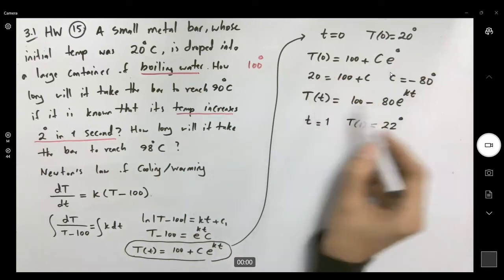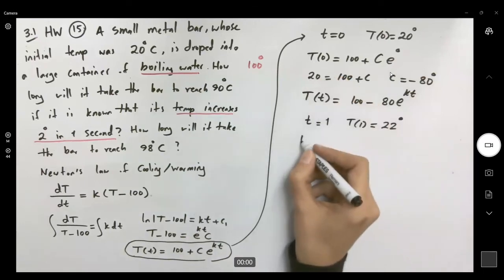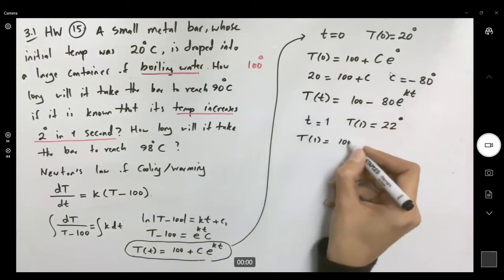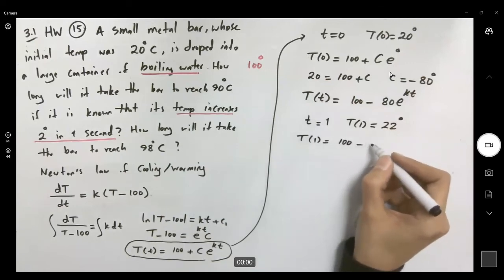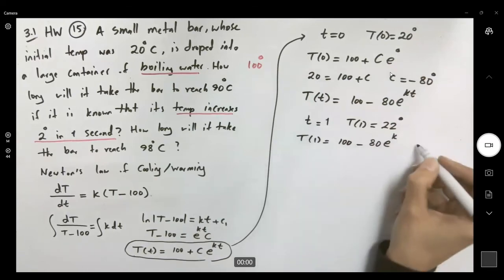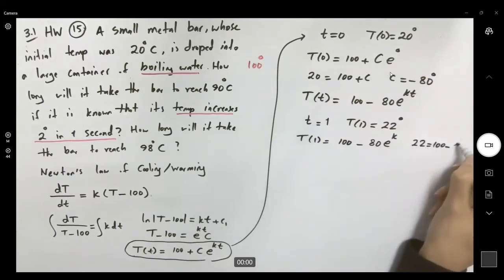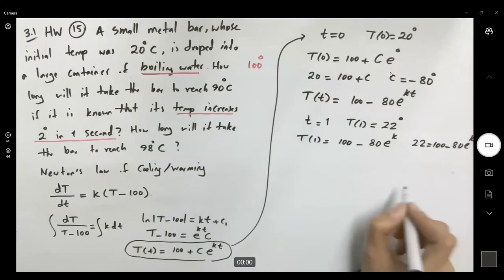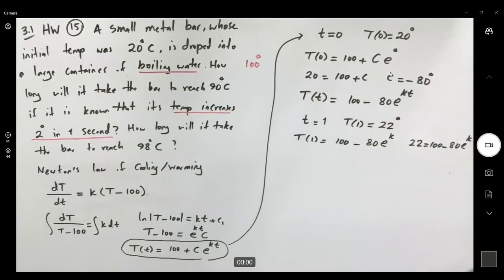So let us use our model. t of 1 is equal to 100 minus 80 e to k. So 22 is equal to 100 minus 80 e to k. Now we can find k.